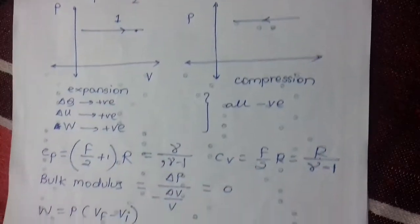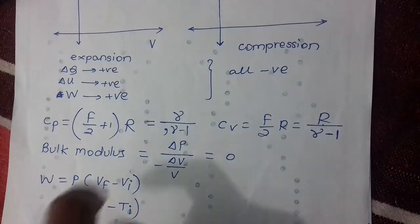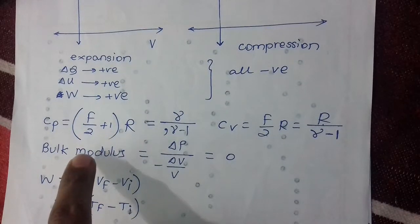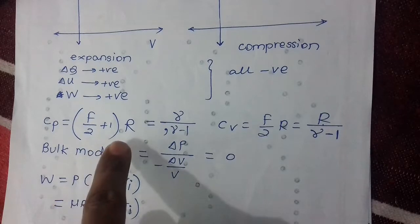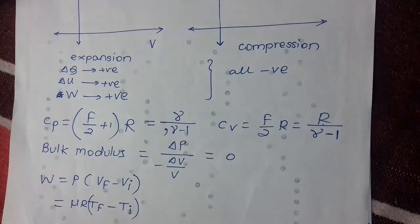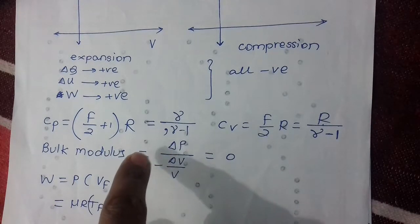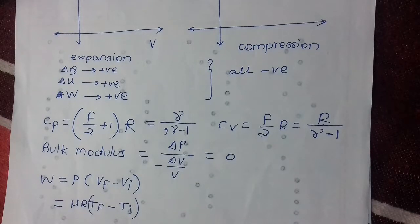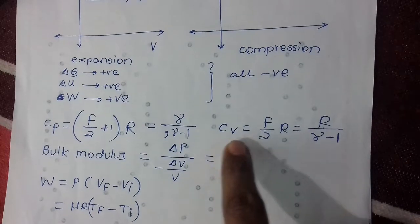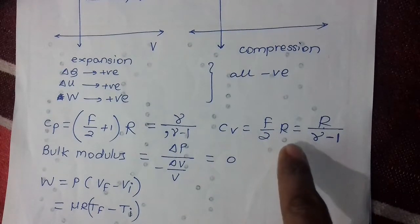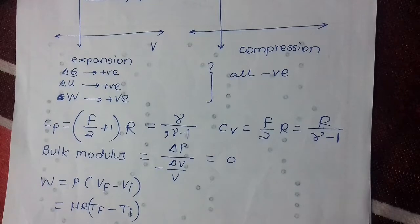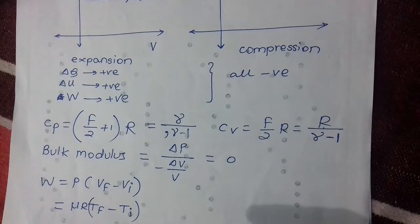For isobaric process, Cₚ = (F/2 + 1)R, or equivalently γ/(γ−1) × R. Cᵥ = (F/2)R = R/(γ−1), where F is degrees of freedom and γ = Cₚ/Cᵥ. Bulk modulus is zero since ΔP = 0. Work done is P(Vf − Vi) = μR(Tf − Ti), and ΔQ = μCₚΔT.